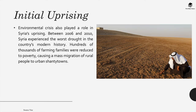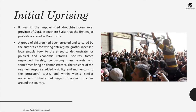Environmental crises also played a role in the Syrian uprising. Between 2006 and 2010, Syria experienced the worst drought in the country's modern history. Hundreds of thousands of farming families were reduced to poverty, causing a mass migration of rural people to urban shanty towns. It was in the impoverished drought-stricken rural province of Daraa in southern Syria that the first major protest occurred in March 2011. A group of children had been arrested and tortured by local authorities for writing anti-regime graffiti, and local people took to the streets to demonstrate for political and economic reforms.